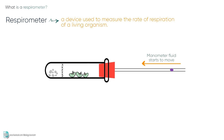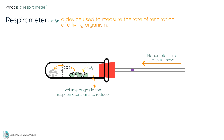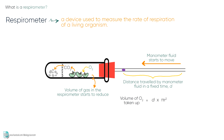This is because when the germinating mung beans are respiring, they take in oxygen and release carbon dioxide. The carbon dioxide produced is absorbed by soda lime. So the volume of gas in the respirometer starts to reduce, and hence the air inside the capillary tube is drawn towards the boiling tube. To measure the rate of respiration, you need to measure the distance traveled by the fluid in a fixed time, then convert the value into the volume of oxygen uptake by multiplying the distance by the area of the capillary tube.